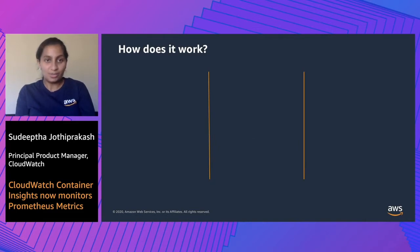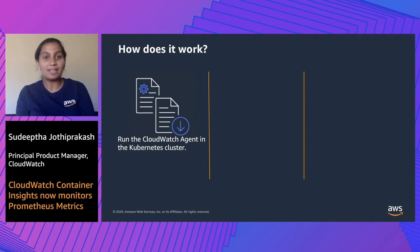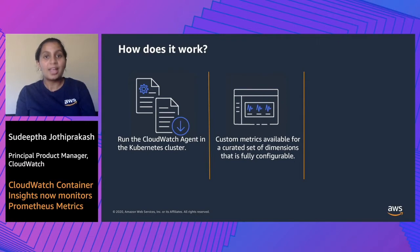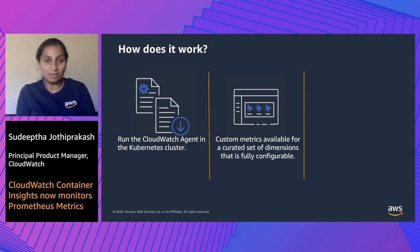So how does all of this work? You can start by running the CloudWatch agent in the Kubernetes cluster. The agent now supports Prometheus configuration, discovery, and publishing all high-fidelity and cardinality Prometheus metrics and metadata in the form of embedded metric format to CloudWatch Logs. Custom metrics are available for curated sets of dimensions that are fully configurable. Publishing aggregated Prometheus metrics as CloudWatch custom metrics statistics reduces the number of metrics needed to monitor, alarm, and troubleshoot performance problems and failures.